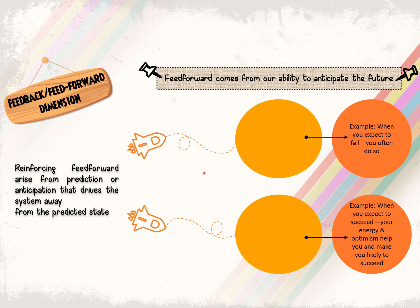Feed-forward comes from our ability to anticipate or predict the future, which drives the system away from the predicted state. For example, when you expect to fall, you often do because your mind has anticipated it. Conversely, when you expect to succeed, your energy and optimism will help you succeed. If you focus on a certain goal and believe in your opportunity for success, it drives your energy and optimism.